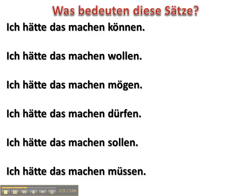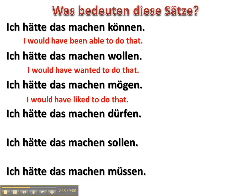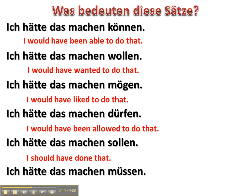Here are some examples of the same sentence used with different modal verbs, so you can see the differences in meaning they impart. 'Ich hätte das machen können' means I would have been able to do that. 'Ich hätte das machen wollen' means I would have wanted to do that. 'Ich hätte das machen mögen' means I would have liked to do that. 'Ich hätte das machen dürfen' means I would have been allowed to do that. 'Ich hätte das machen sollen' means I should have done that. And 'ich hätte das machen müssen' means I would have had to do that.